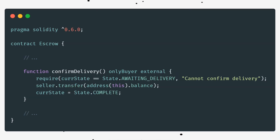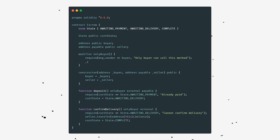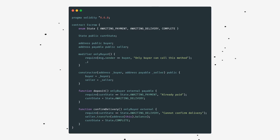The second and final method allows the buyer to confirm that they actually received the item. Once again, only the buyer can call it. It can only be called in the awaiting delivery state. Once called, it transfers the funds from the contract to the seller and marks the escrow complete. The completed contract will look like this.